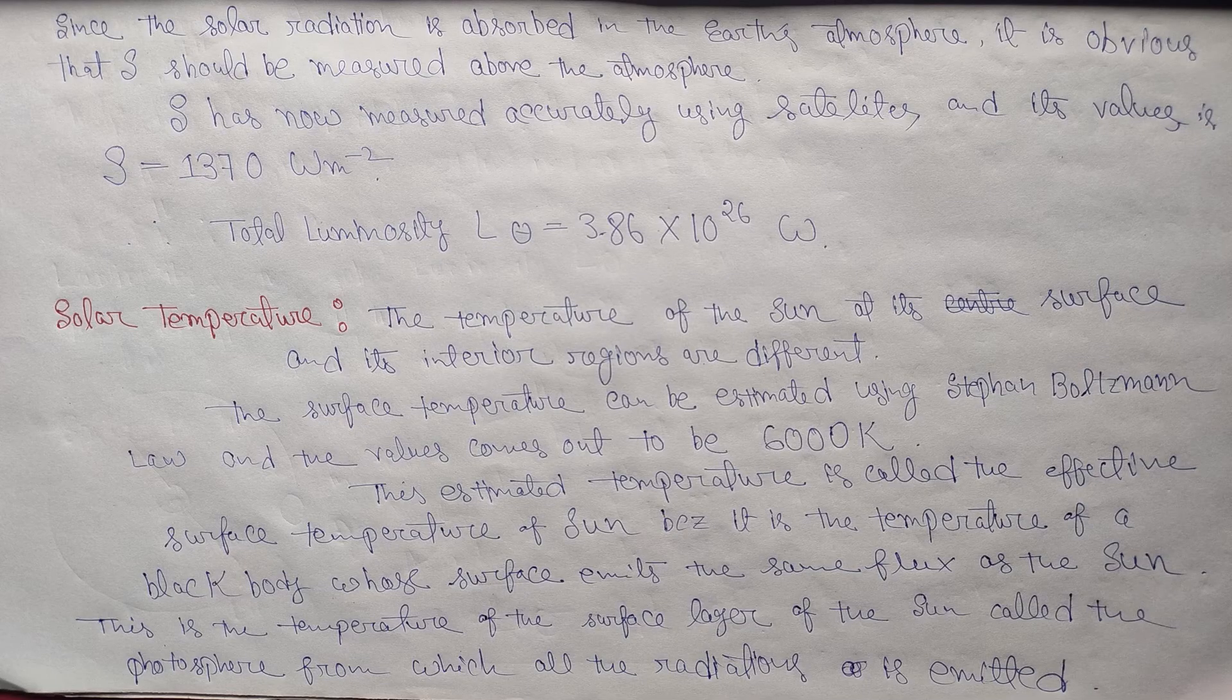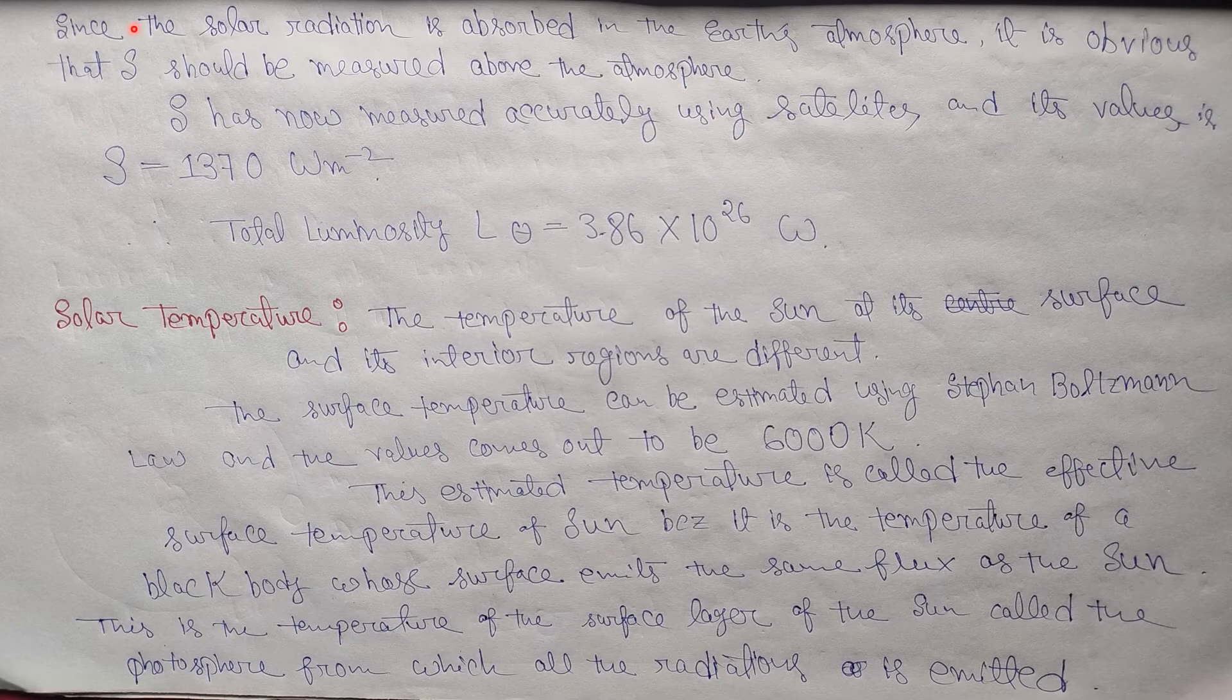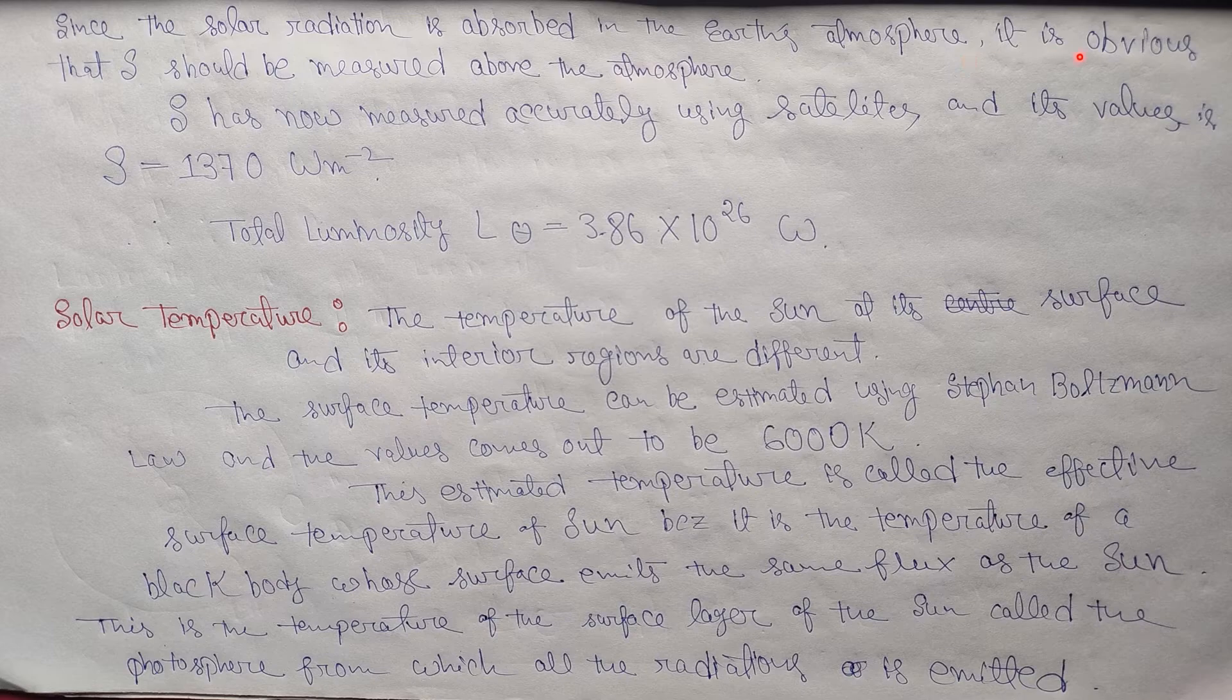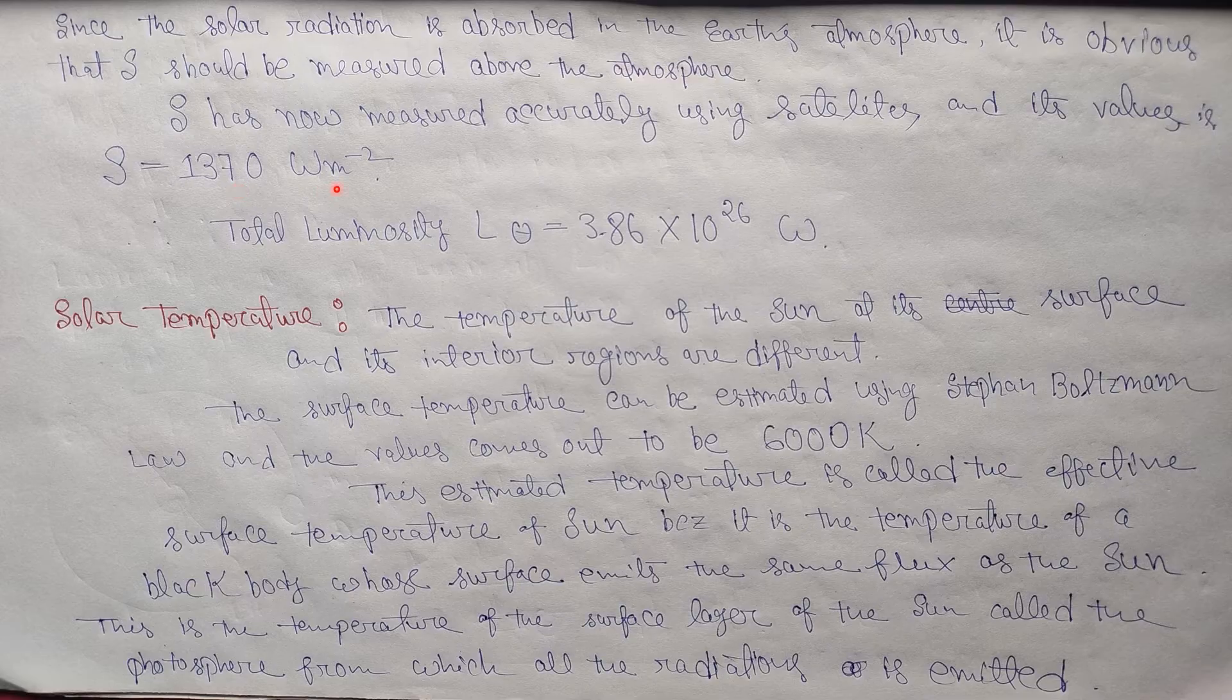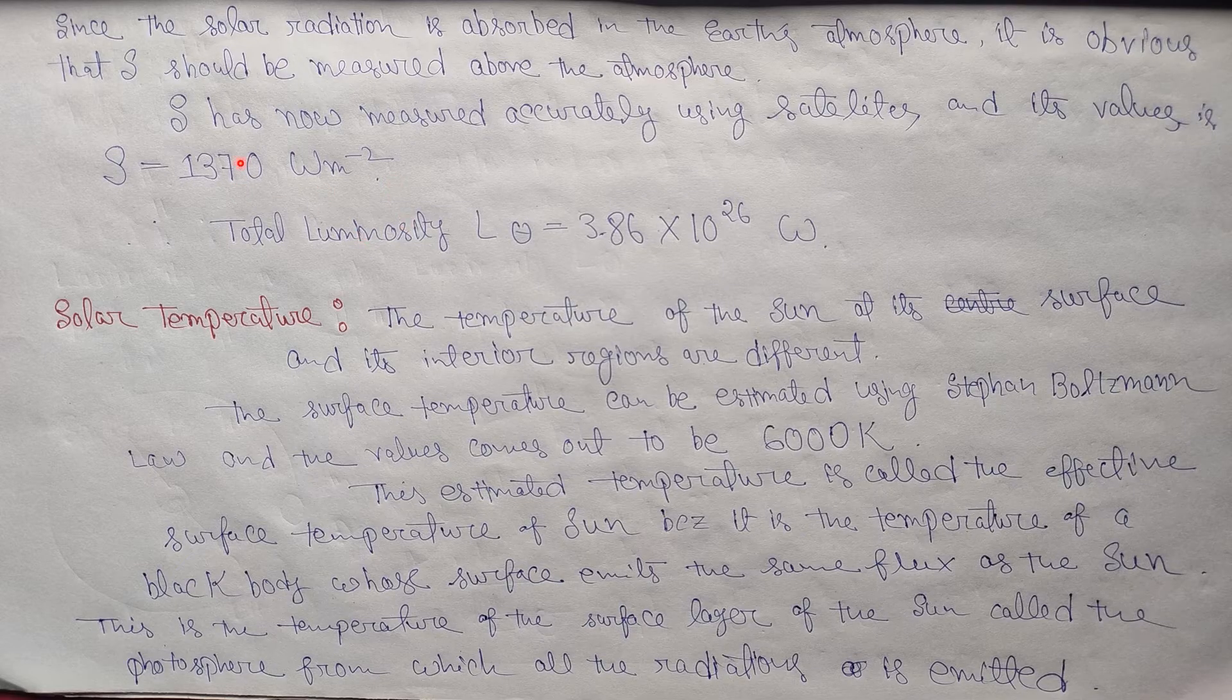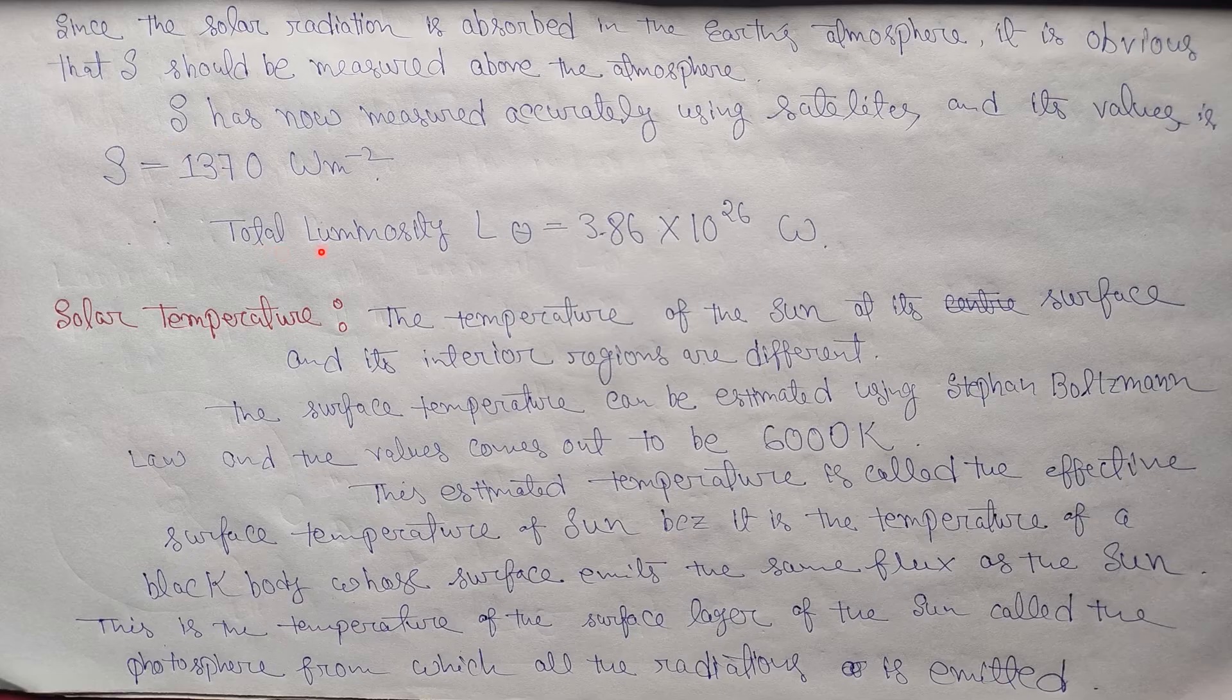Since the solar radiation is absorbed in the earth's atmosphere, it is obvious that S should be measured above the atmosphere. S is now measured accurately using satellites and its value is S = 1370 watts per meter square. So putting the value of S in the above equation, we get total luminosity of our sun L☉ = 3.86 × 10^26 watts.